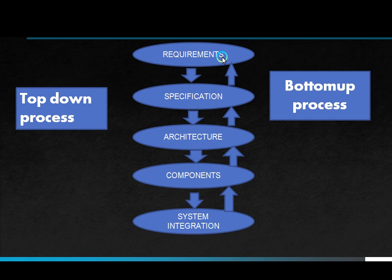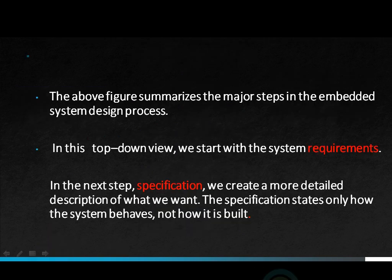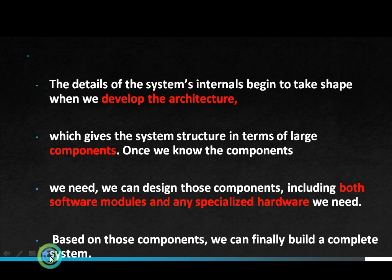The above figure summarizes the major steps in the embedded system design process. In the top-down view, we start with system requirements - what the user needs. In the next step, specification, we create a more detailed description of what we want. The specification states only how the system behaves, not how it is built - all internal parts and what is needed are described in the specification.